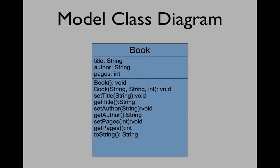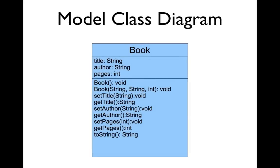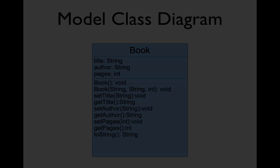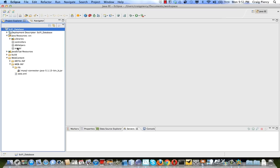Let's start by making our model class. Here we see the Book UML class diagram. We'll deviate from it just a little bit by adding another instance variable called book ID, which will be an int.